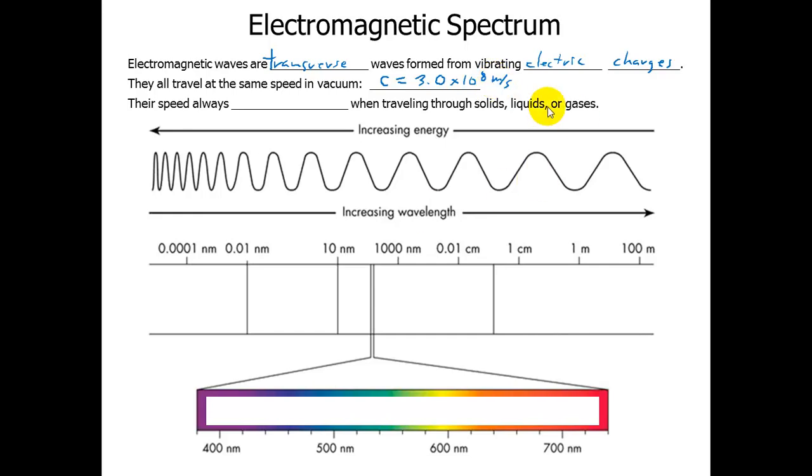Just to get an idea how fast this is, light can go around the earth seven times in one second. Their speed always decreases when traveling through solids, liquids, or gases, because the wave now begins to interact with the matter of that solid, liquid, or gas. So even light coming into our atmosphere slows down a little bit. Light going into water slows down significantly, like maybe by 25 or 30%. Let's take a look at the EM spectrum.